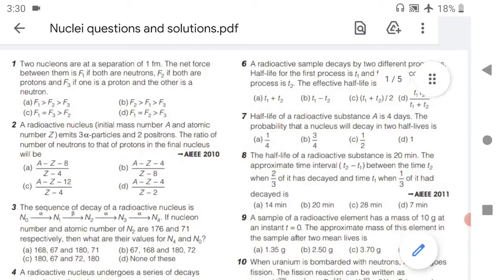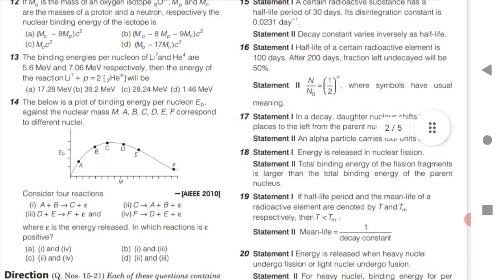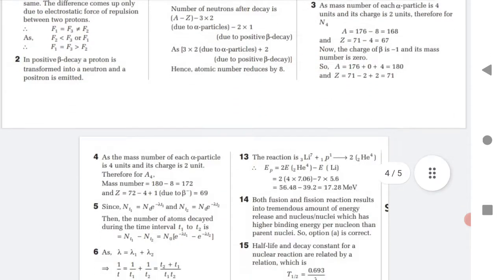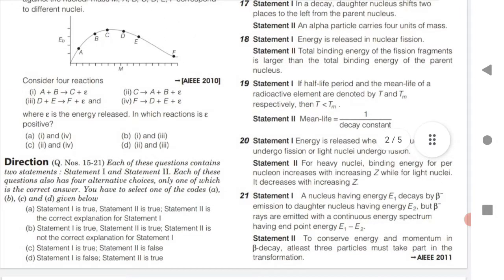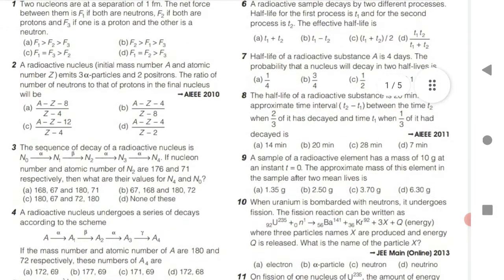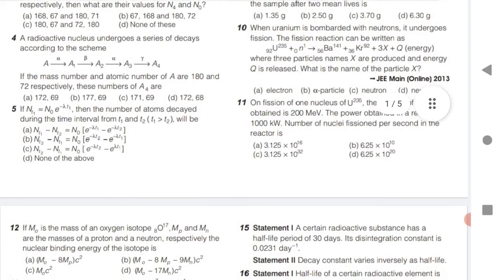For nuclei, we have given the important MCQs, theory as well as numerical questions. We have given 21 MCQs with solutions. Each and every question solution is available in the PDF. If you want the PDF, click on the description, download the PDF, and practice these questions. They are very helpful to get good marks from this chapter for both TS and AP EMCET exams.